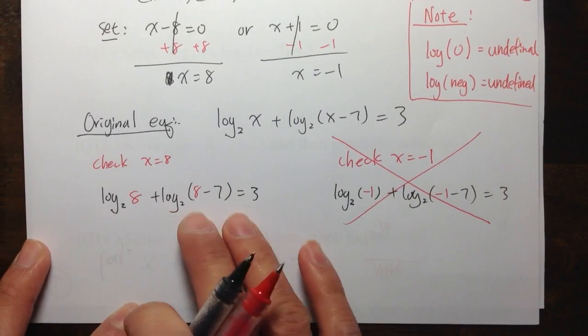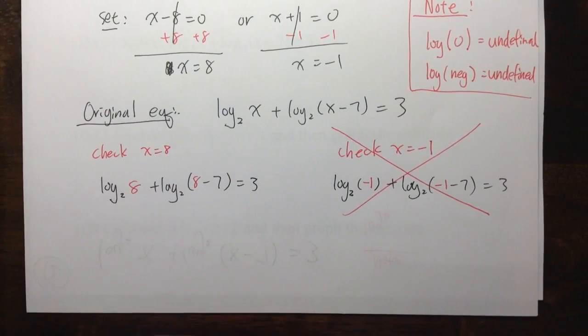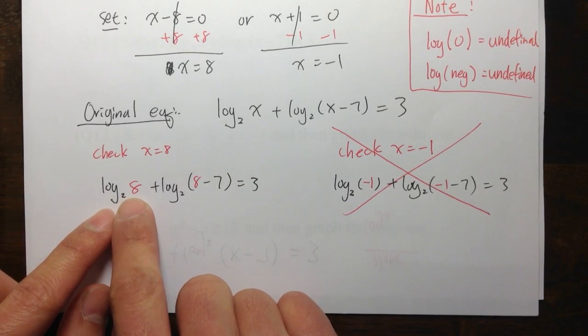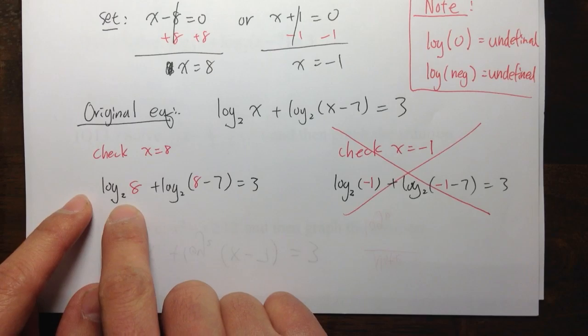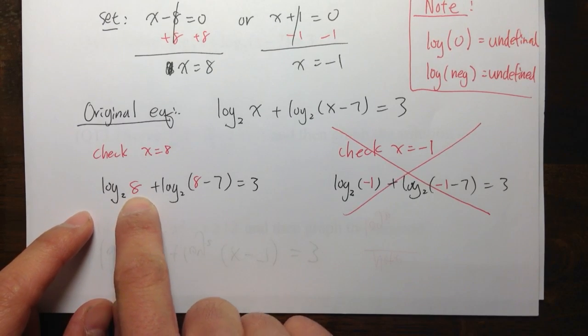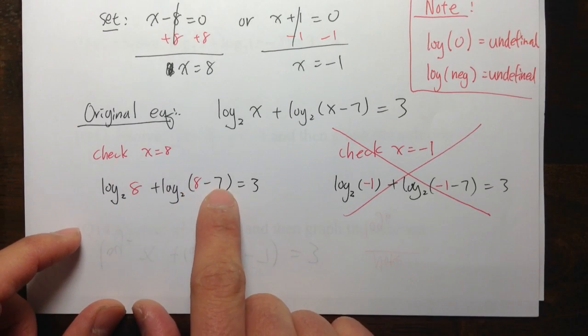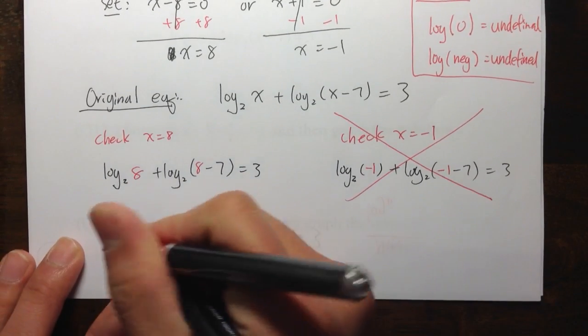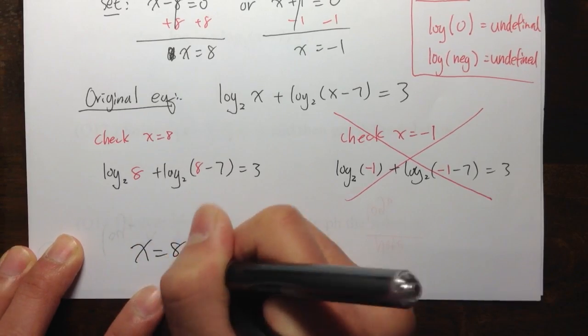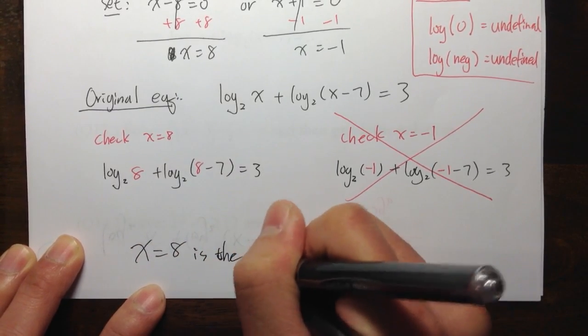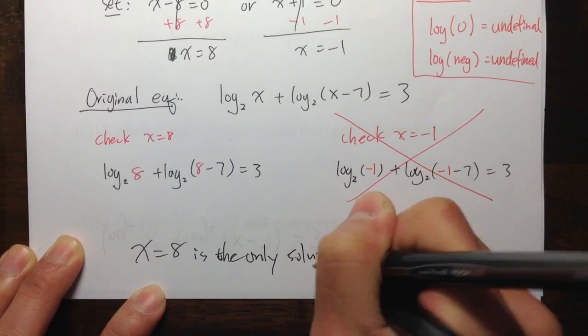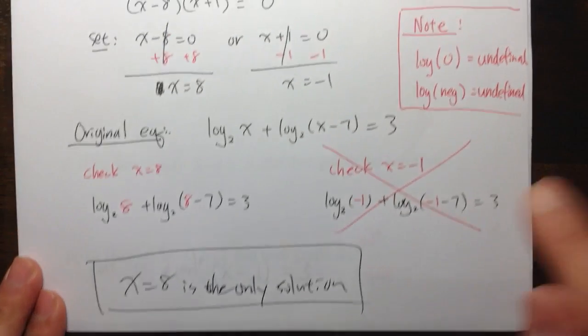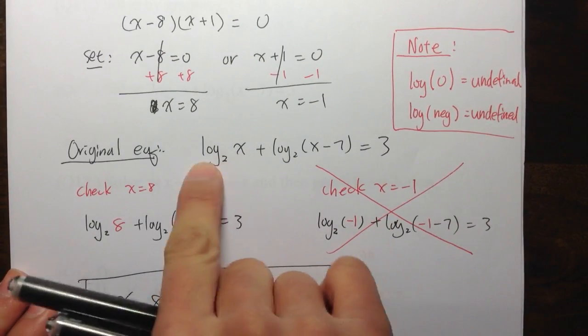Now, let's check with 8. So, what can just do the quick check? A quick check means just you need to make sure the inside of the logs turn out to be positive. Log base 2 of 8. 8 is positive. So, that's good. 8 minus 7 is positive 1. That's good. So, x is equal to 8. It's the only solution. x equal to 8 is the only solution to the equation. This is the answer that you need to box.